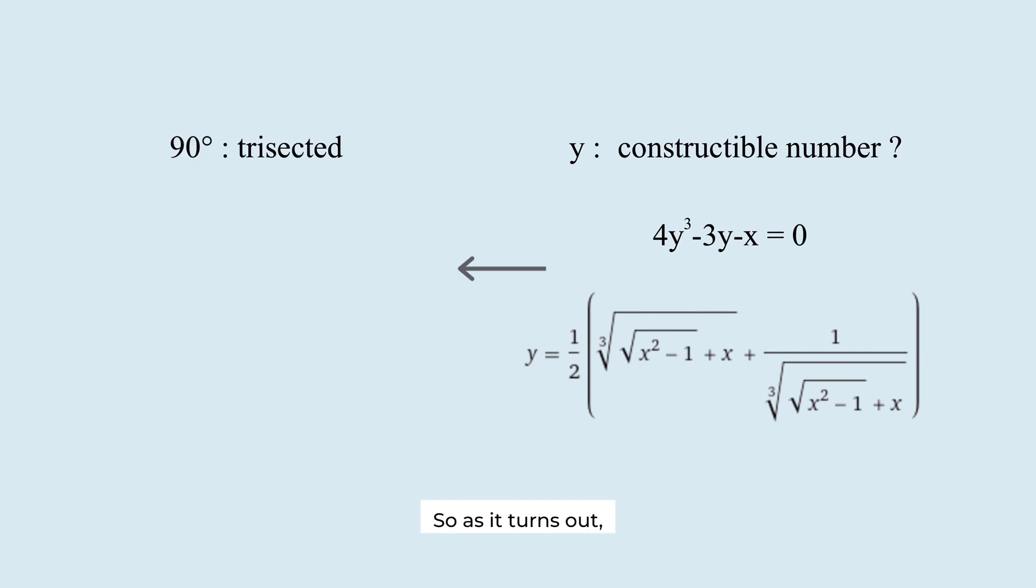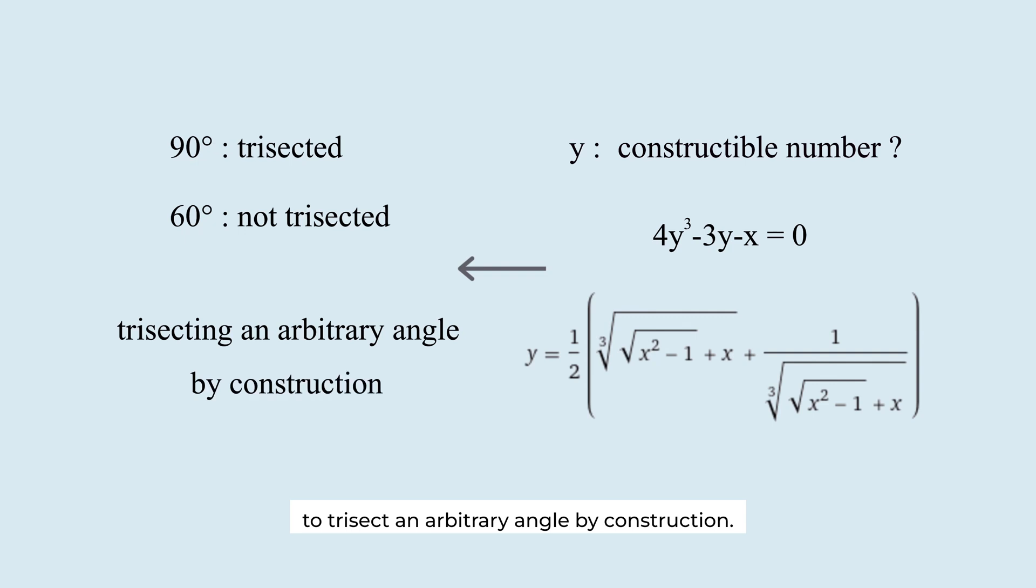So, as it turns out, there are some angles we can't trisect. In conclusion, it is impossible to trisect an arbitrary angle by construction. This result was achieved by transforming a geometry problem into an algebra problem. Such an ingenious idea! So, thank you!